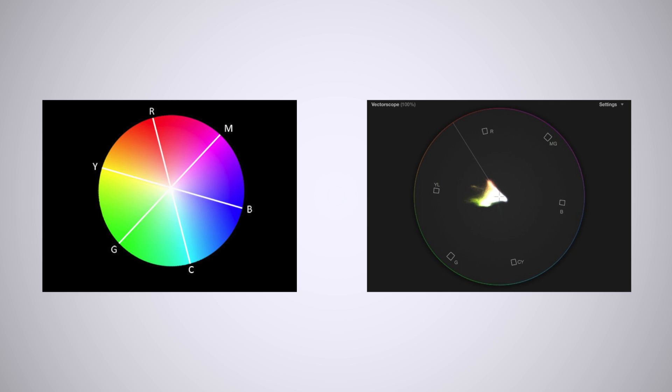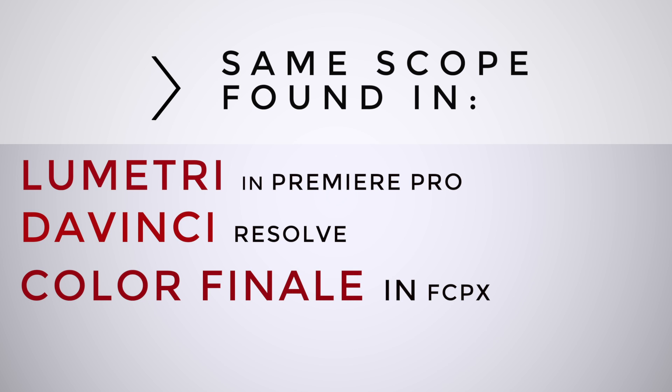Vectorscope is a target-based data scope on a traditional color wheel divided into six sections based on primary colors and mixed colors in between those six sections. If you use proper color correcting software such as Lumetri in Premiere Pro, DaVinci Resolve, or Color Finale in Final Cut Pro X, this scope should be familiar to you. Now to understand how the scope can help you understand what the values mean based on your shot.